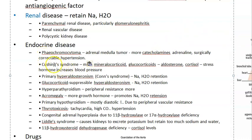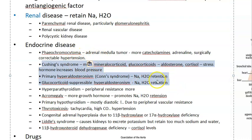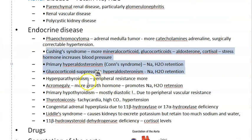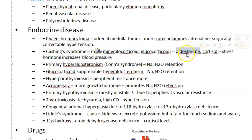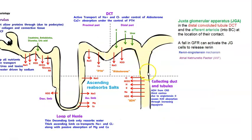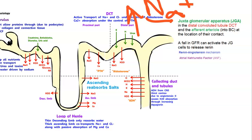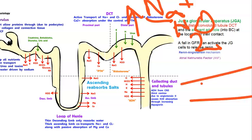Cushing syndrome and hyperaldosteronism both involve the adrenal gland making excess adrenal hormones. More mineralocorticoids and glucocorticoids mean more aldosterone. Aldosterone tells the kidney to reabsorb sodium, and water follows sodium. So your body retains more water, blood volume increases, and blood pressure becomes more.